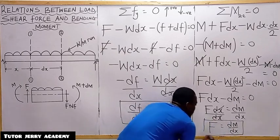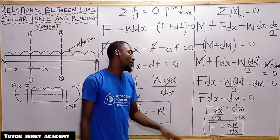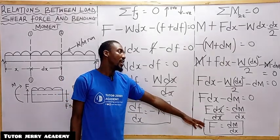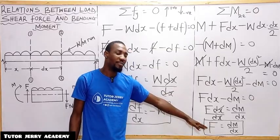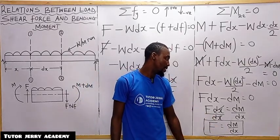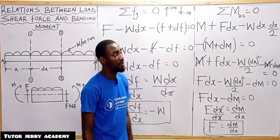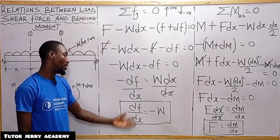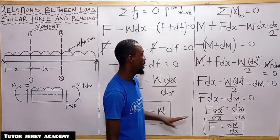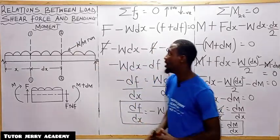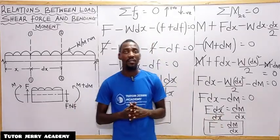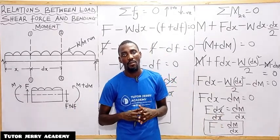This is the second relationship, showing that the rate of change of bending moment equals the shear force at the section: dM/ds = F. The first relationship shows dF/ds = -W, the rate of change of shear force equals the loading. These are the two relationships between load, shear force, and bending moment. I hope you understand this. Stay tuned for more interesting content.